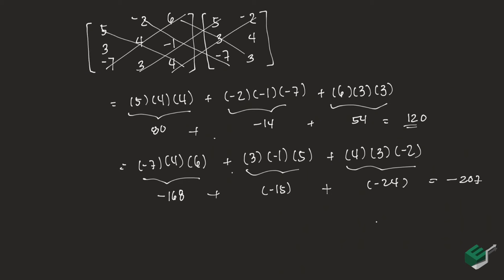Now to get the determinant, we subtract the sum of the first one from the second one. I'm sorry, rather the other way around. So it would be 120 minus negative 207. That would be 120 plus 207, which would be 327. Hence the determinant of this matrix is equal to 327.